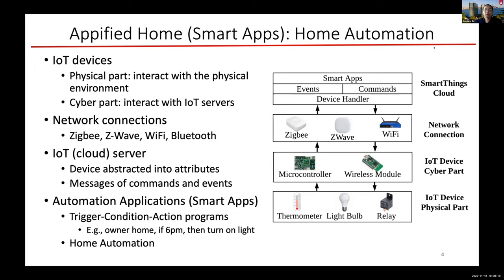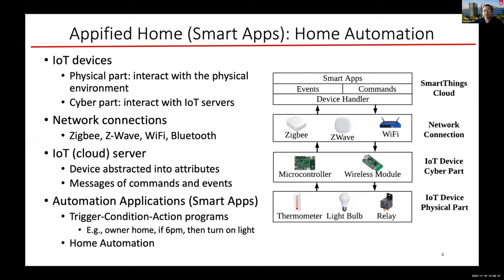In general, for a smart home or a smart environment like a smart hospital or smart office, there are IoT devices deployed — like smart lights, smart locks, and so on. Each device roughly consists of two parts: one is the physical part that does the function, like a light bulb or measuring temperature; the other part is for wireless communication, called the cyber part. Various wireless technologies are used for IoT devices, including Wi-Fi, Bluetooth, ZigBee, and Z-Wave.